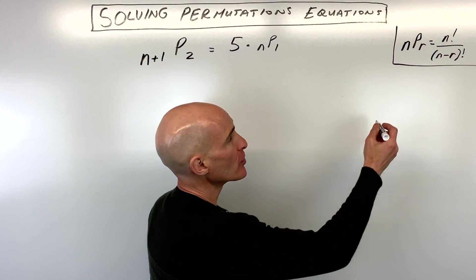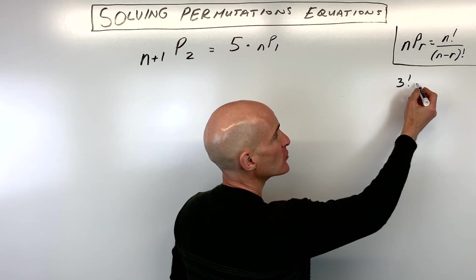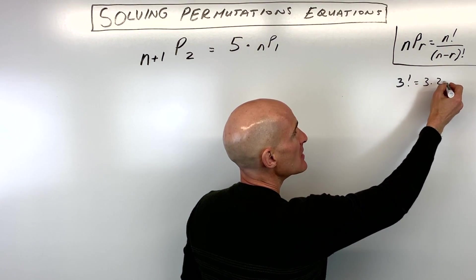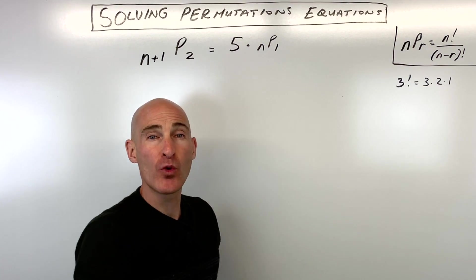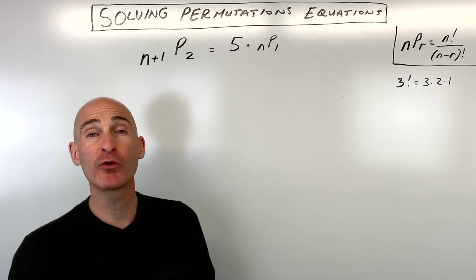And remember what a factorial is. You take whatever quantity you're working with, say like 3 factorial, and you multiply by 3, then 2, then 1. You keep subtracting 1 and work your way down to 1, multiplying all those together.